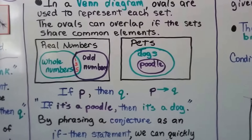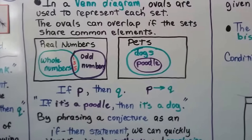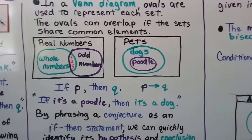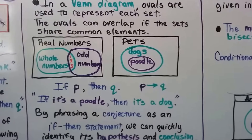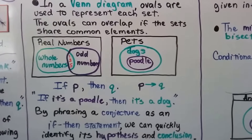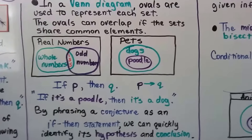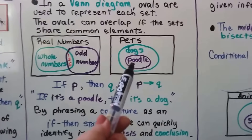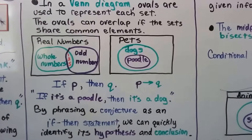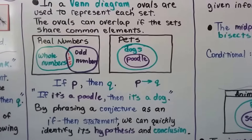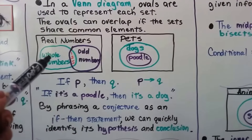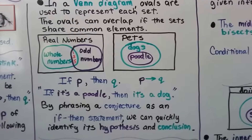By phrasing a conjecture as an if-then statement, we can quickly identify its hypothesis and conclusion. If it's an odd number, it's a whole number. If it's a poodle, it's a dog. The hypothesis would be poodle, conclusion would be dog. Hypothesis would be odd number, conclusion would be whole number.